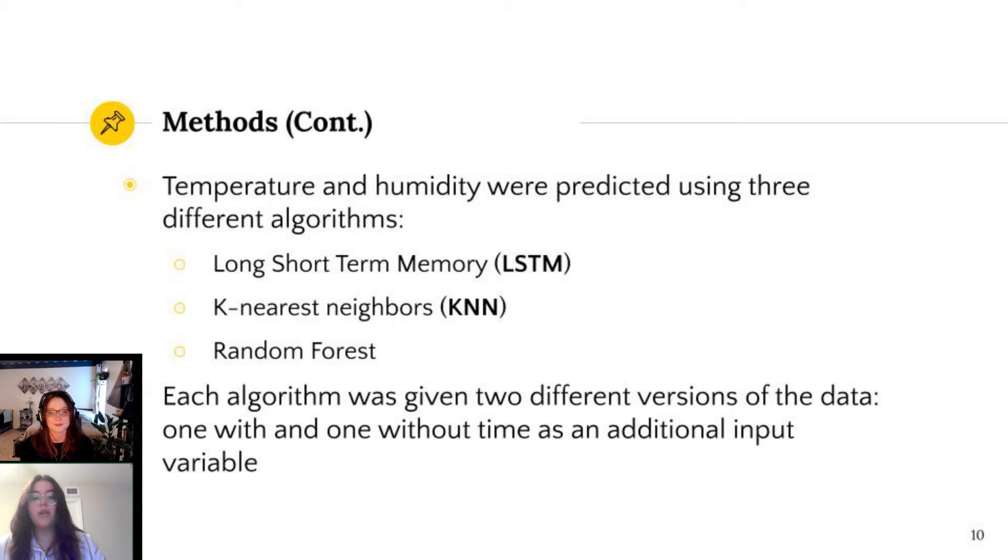In addition to comparing the algorithms, we wanted to see if including an adjusted time variable as an input would alter algorithm performance. We theorized that it would improve the performance since real-world daily temperature patterns are fairly consistent following a 24-hour period. To test our hypothesis, we trained each algorithm twice, once with time as an input and once without, giving us a total of six models to compare.